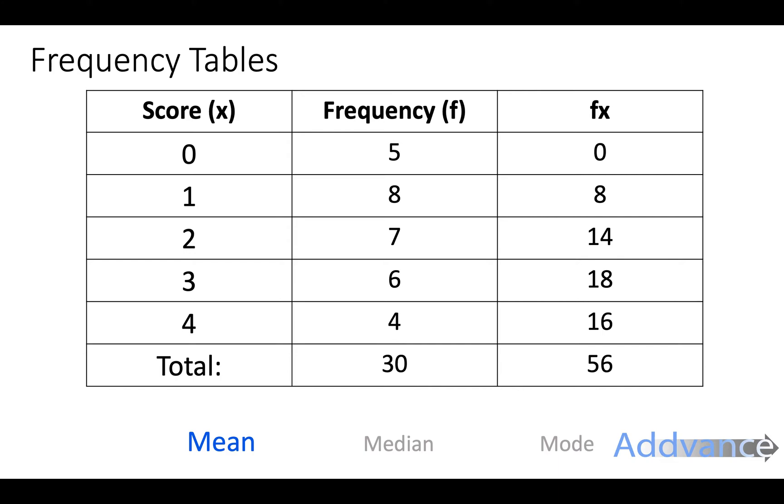To work out the mean, we're going to do 56 divided by 30. The sum of the fx goes on top, the sum of the frequency goes on the bottom. Tap into your calculator and you get 1.87 as the final answer. The average for all these scores is 1.87.